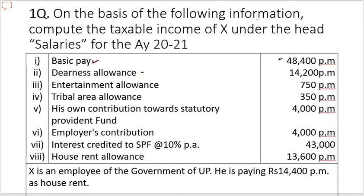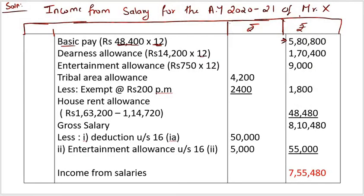Next, dearness allowance. The dearness allowance is ₹14,200 per month, which gives an annual amount of ₹1,70,400.